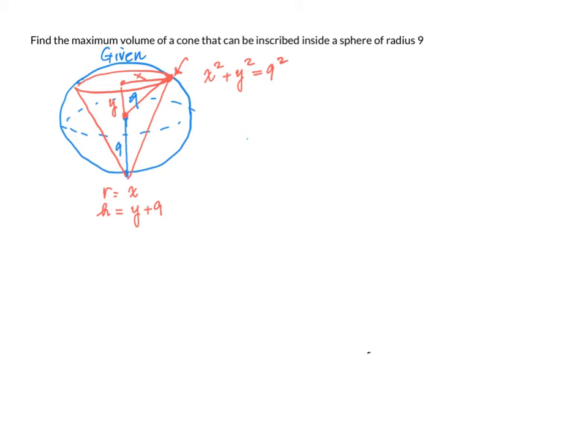Let's go over here and show the work. We want to maximize the volume of a cone, and the volume of the cone is 1 third pi r squared, which is x squared, times the height. And we know the height of the cone is given y plus 9.